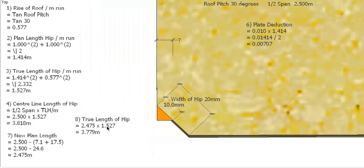Take that, times it by our length per meter for the hip, and we end up with a new length of our hip of 3.779 meters so far. That's the new length allowing for our deductions.